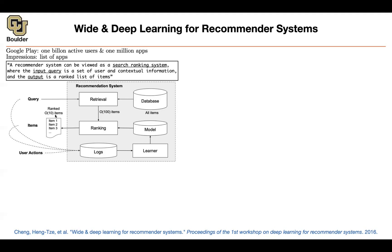If the user wants to see the next 10, they can click the button and that will show them the next 10 items. As the user is interacting with your system, you're collecting data — we recommended these items, and then they actually clicked on perhaps the third or fourth item, or they clicked on none of them. You record that data and keep updating your model.